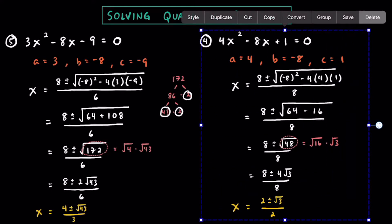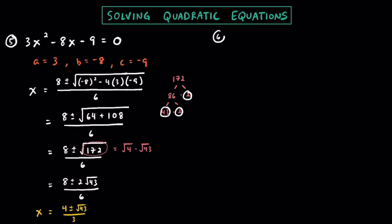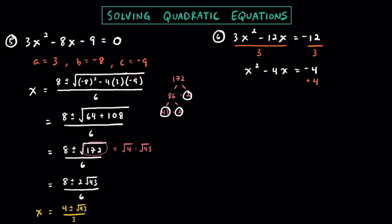Let's try a sixth example. We have 3x squared minus 12x equal to negative 12. This is the first one where we have something on the other side of the equation. Before I do anything, I'm going to divide everything by 3 since that's a common factor. Dividing by 3 gives us x squared minus 4x equals negative 4. The second thing I want to do is move everything to the same side of the equation so it equals zero, which gives us x squared minus 4x plus 4 equals zero.